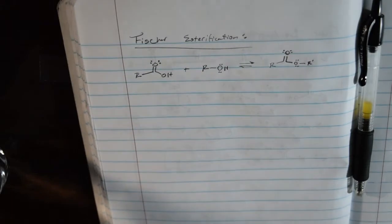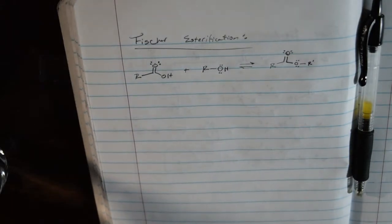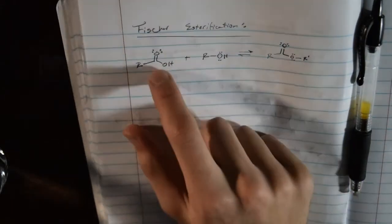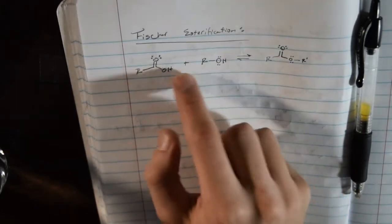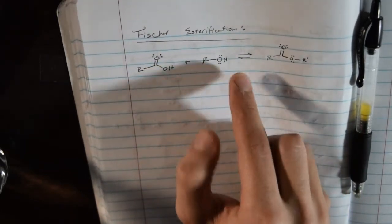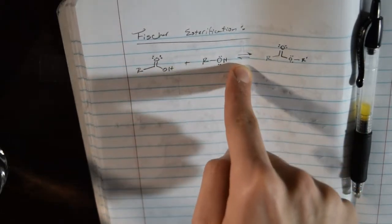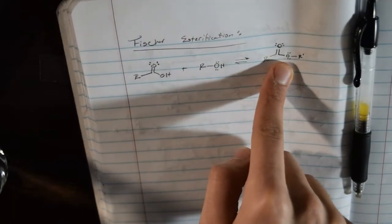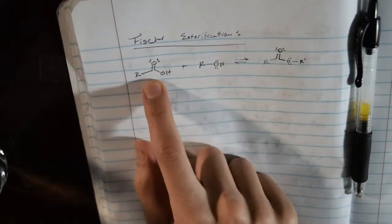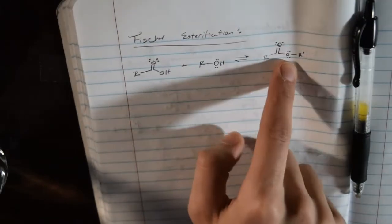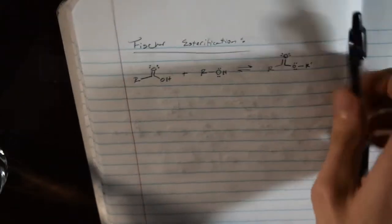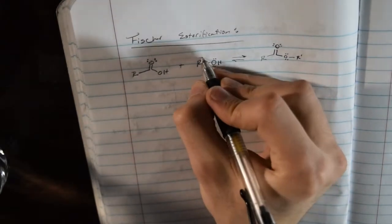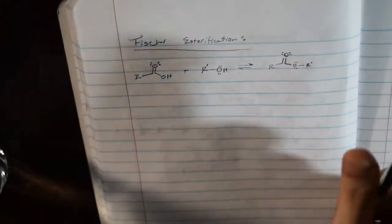In this reaction we're making an ester, where we have a carboxylic acid group and an alcohol group — both of them react in an equilibrium to make an ester between these two. I color-coded it with pencil and black pen to show you where the atoms are coming from.